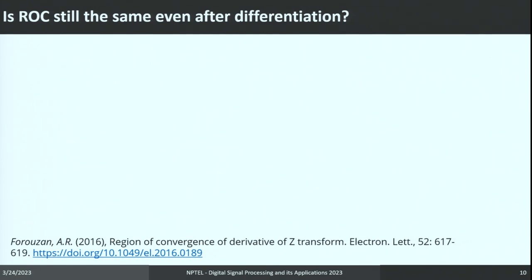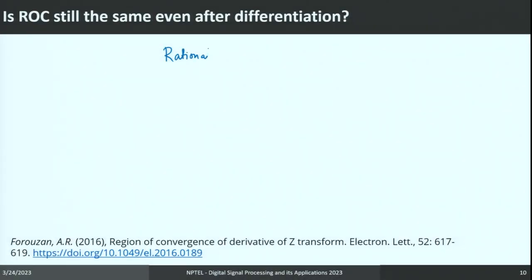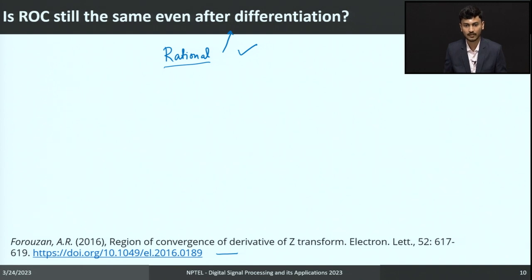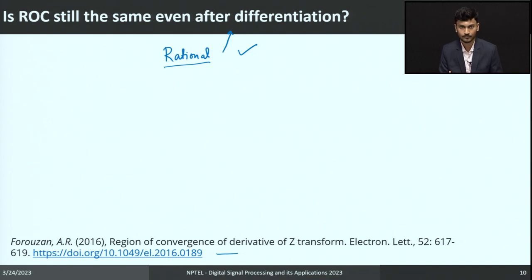One important note: I used the fact that the ROC is preserved after differentiation. This only holds when the system is a rational function. For an irrational function, the ROC of the derivative may differ from the ROC of the original function. A reference link is provided below with an example demonstrating this difference for the irrational case; we are skipping it here for the sake of time, but you can go over it for a quick read.